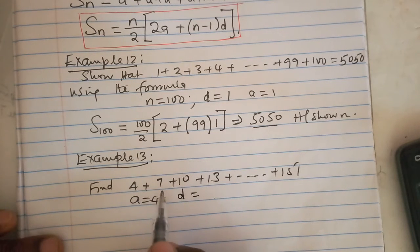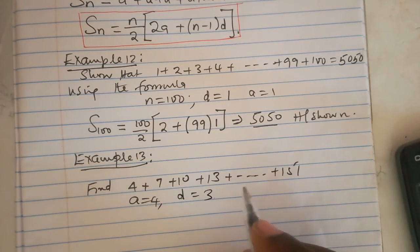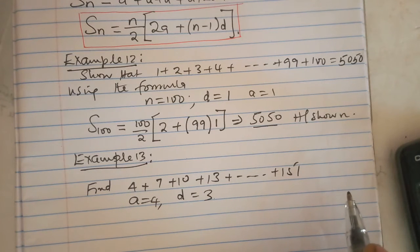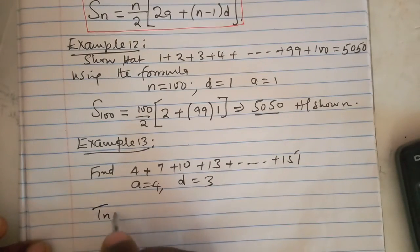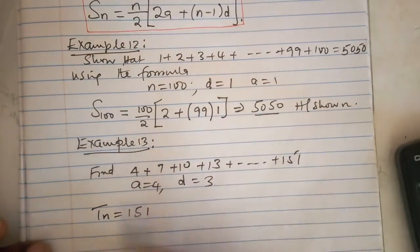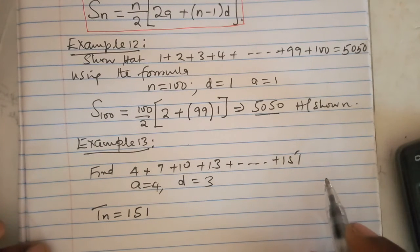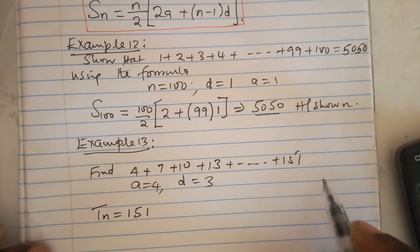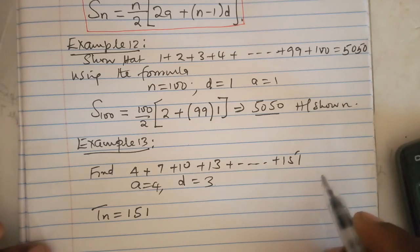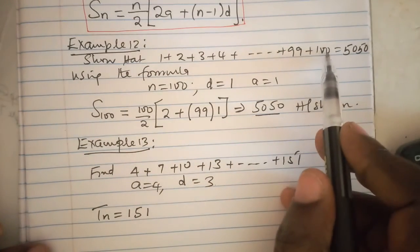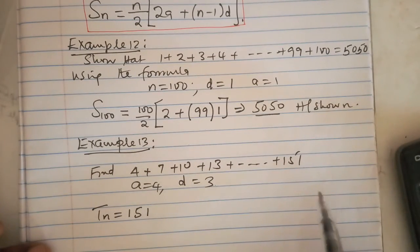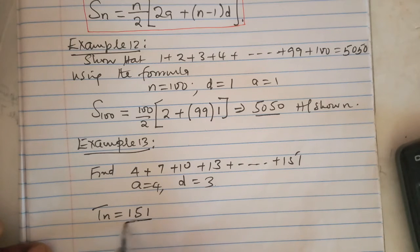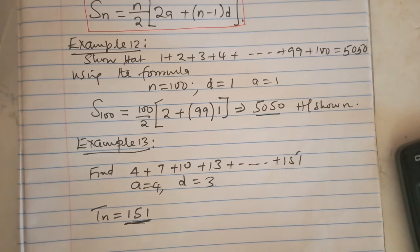Do we have the nth term? The nth term is 151. We don't know the position of 151 because it's not a conspicuous sequence that you can follow like the one we had before, 1 plus 2 plus 3 all the way plus 100. Here it's not easy to tell how many terms we have, but since we have the last term which is 151, we just have to assume 151 is occupying the nth term.